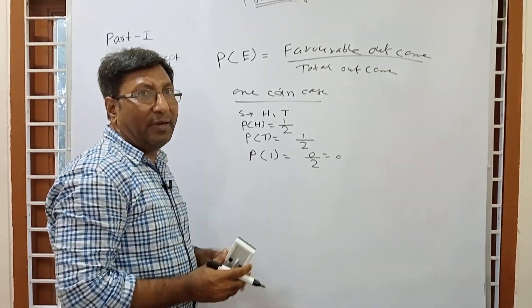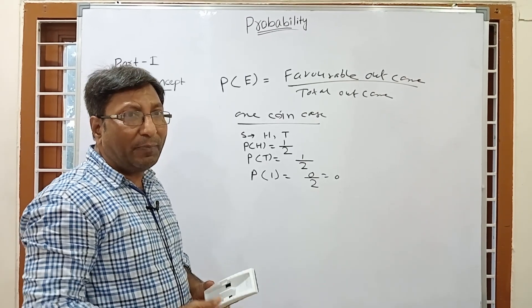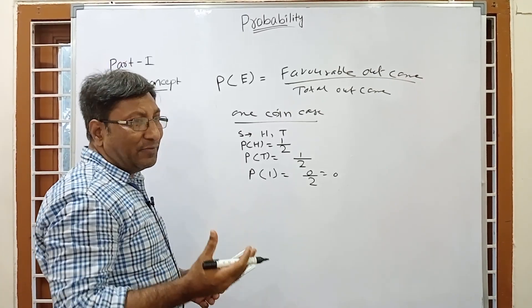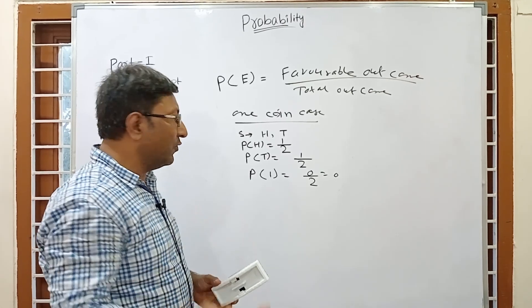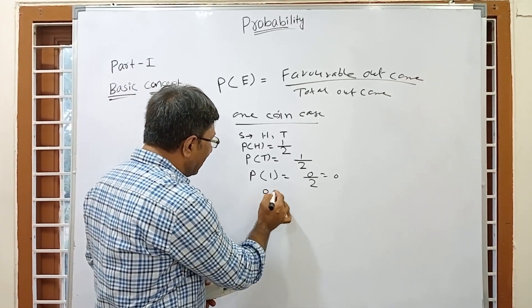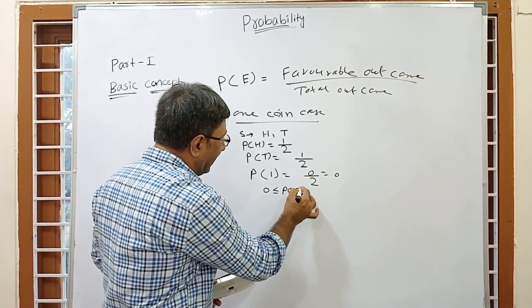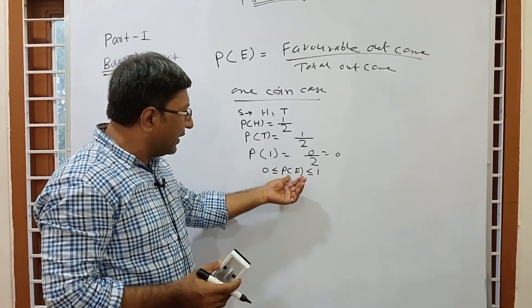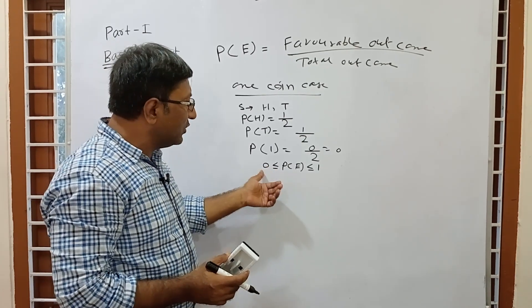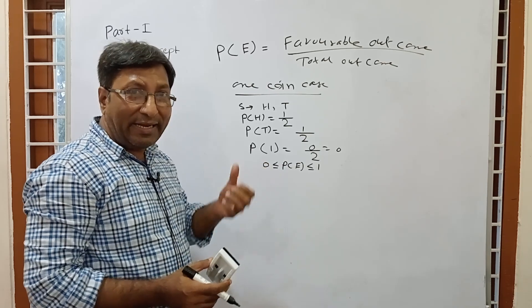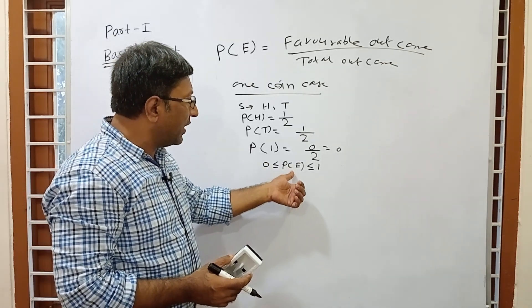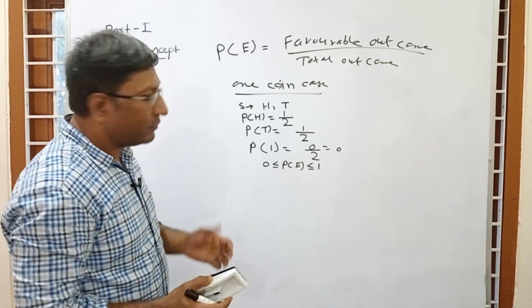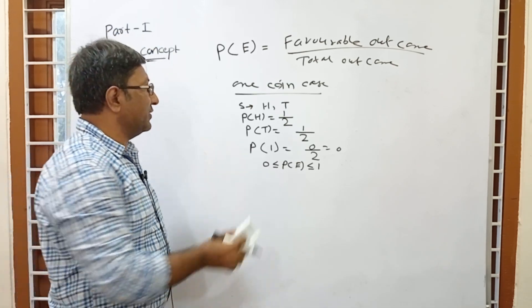This is an important point: the probability of any event cannot be less than 0 and cannot be more than 1. So the probability of any event lies between 0 and 1, including 0 and 1. That means 0 ≤ P(event) ≤ 1. The minimum probability of any event is 0 and the maximum is 1. This is the most important concept.